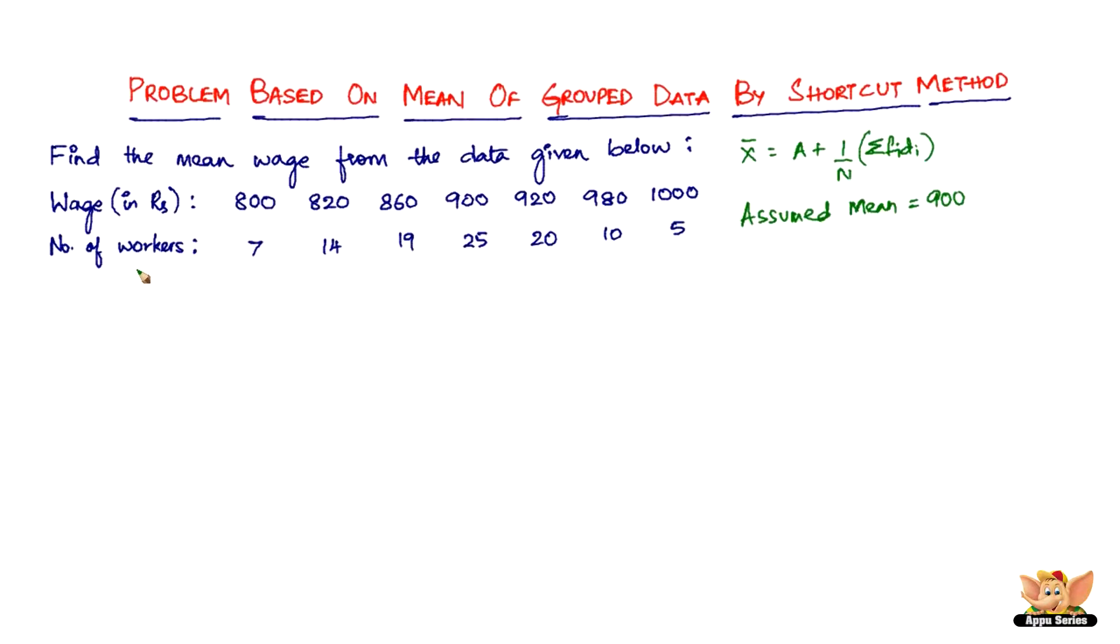So now let's see how we calculate the mean. Let's get the table done. We've got wage in rupees, so that is what xi is. So xi is nothing but 800, 820, 840, 900, 920, 980, and 1000. And then the number of workers, which is fi: 7, 14, 19, 25, 20, 10, and 5.